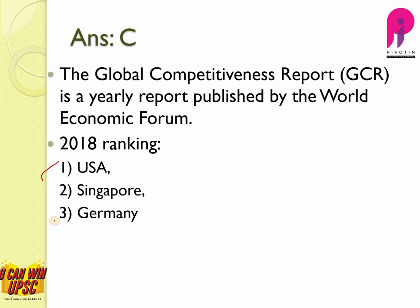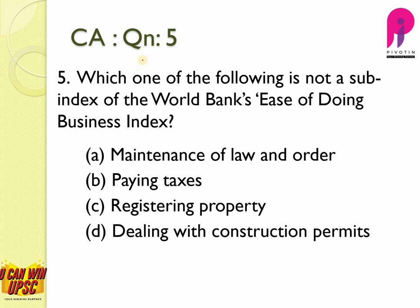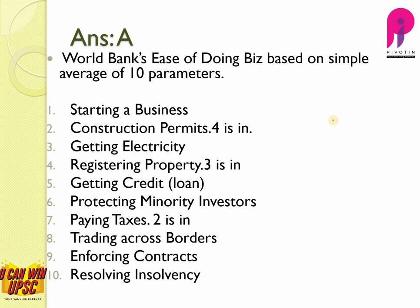Question number 5: You can see the 2018 ranking. Which of the above is not a sub-index of the World Bank's Ease of Doing Business index? India's rank jumped so much in the case of Ease of Doing Business, so the details of the index are very important. Please do study all 10 sub-indexes of the World Bank's Ease of Doing Business index. The answer is A, maintenance of law and order — it is not a sub-index. Pass the slide and memorize the 10 sub-indexes.